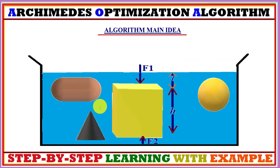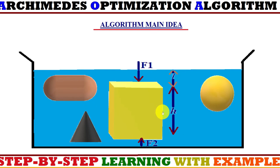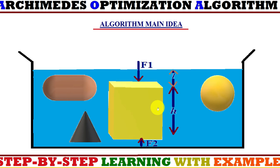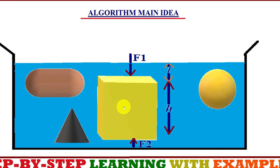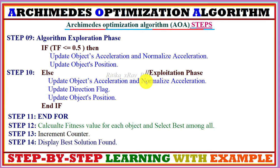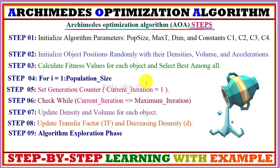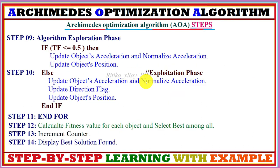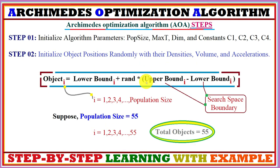This algorithm aims to reach a point where objects are naturally buoyant, meaning the net force equals zero — the equilibrium state. It is assumed that objects are immersed in the same liquid and each one is trying to reach the equilibrium state. Different steps are used in this algorithm to find the optimal solution for engineering design and numerical optimization problems.